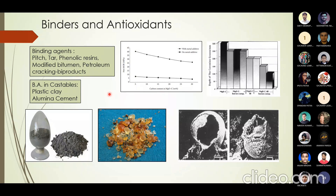Regarding antioxidants: carbon has oxidation tendency, and if the carbon-containing refractory is exposed to atmospheric oxygen, it will oxidize and pores will reappear. Antioxidants are materials that oxidize faster than carbon, thus preventing carbon oxidation. The most commonly used antioxidants are aluminum and silicon. For aluminum: it oxidizes to form Al₂O₃, which reacts with MgO in magnesia-carbon refractory to form spinel. This spinel fills pores and forms a protective coating over the graphite, preventing carbon oxidation.